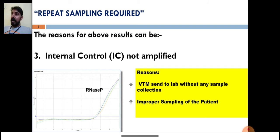If the sample is not collected properly, it can be a reason that IC will not be amplified in RT-PCR, and the lab has to report the sample as repeat sampling required.